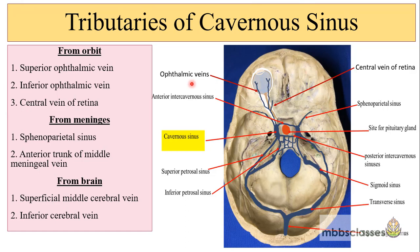From the orbit, drainage is by the ophthalmic veins — superior ophthalmic vein, inferior ophthalmic vein, and the central vein of retina — which drain into the anterior part of the cavernous sinus. From the meninges, via the sphenoparietal sinus draining bilaterally into the anterior end, and by the anterior trunk of the middle meningeal vein. From the brain, via the superficial middle and inferior cerebral veins. The cavernous sinus drains into the transverse sinus and the anterior jugular vein via the superior and inferior petrosal sinuses, and also connects with the vertebral plexus through the basilar venous plexus.